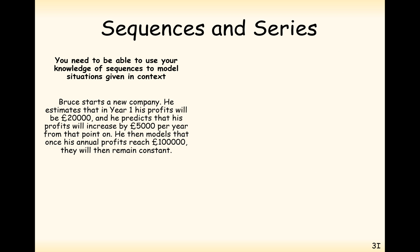Bruce starts a new company. He estimates that in year one his profits will be £20,000, and he predicts that his profits will increase by £5,000 per year from that year onwards. He then models that once his annual profits reach £100,000, they will remain constant. Calculate the profit for Bruce's business in the first 20 years. We'll need to find out when his profits reach £100,000 since the pattern is going to change at that point.